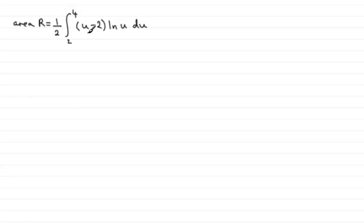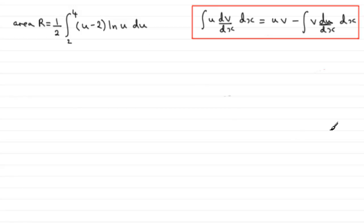Well we've got a product of two functions of U here that we can't really expand so we're going to need to use integration by parts. I'm assuming you're familiar with integration by parts. We use this particular identity here.